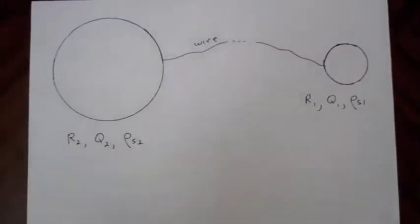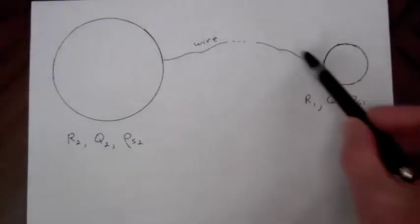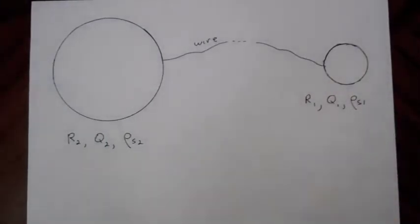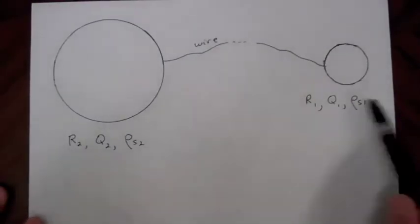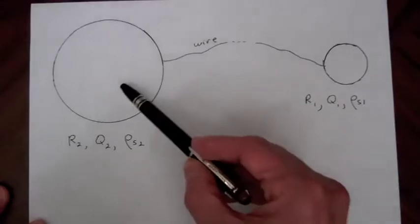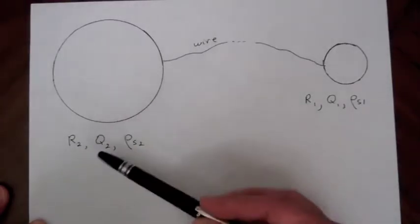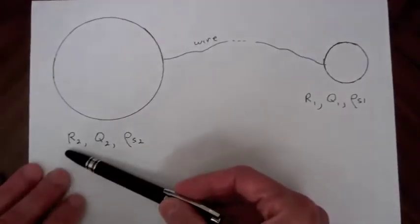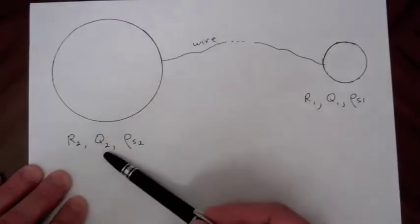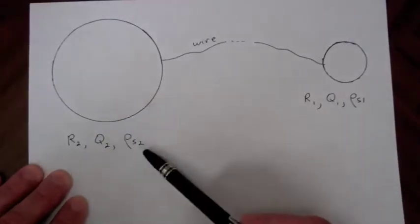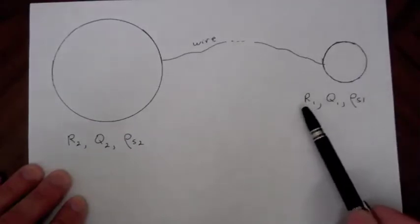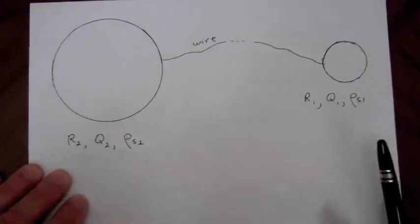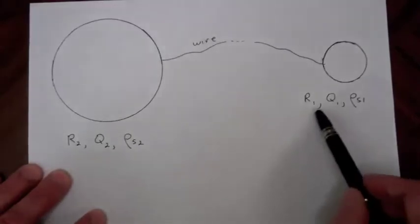So we'll have these two spheres. We've maintained contact with this wire so they've remained at an equipotential, and at this point they're separated by a great distance. We'll call one sphere 2 with radius R₂, total charge Q₂, and surface charge density ρ_S2. And this will be sphere 1 with radius, charge, and charge density defined similarly.